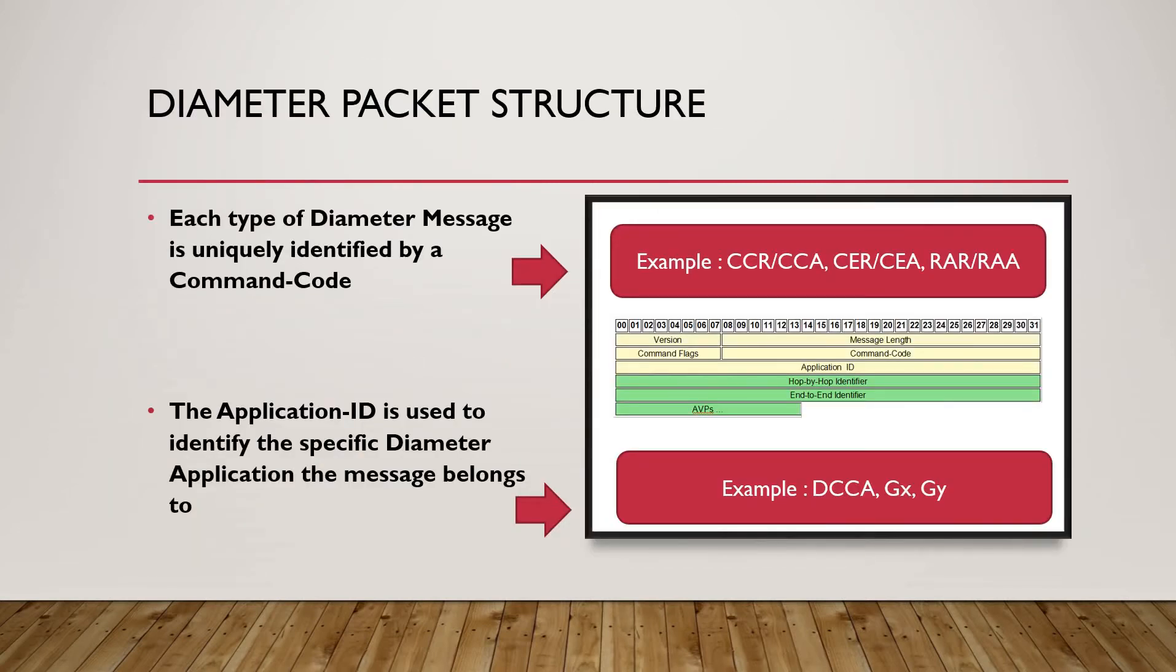These are the packet structure of the diameter. We have version, command flag, message and command code, application ID, hop-by-hop identifier, end-to-end identifier and AVP. No need to worry friends, I have kept separate two slides to explain you each and every part of this.